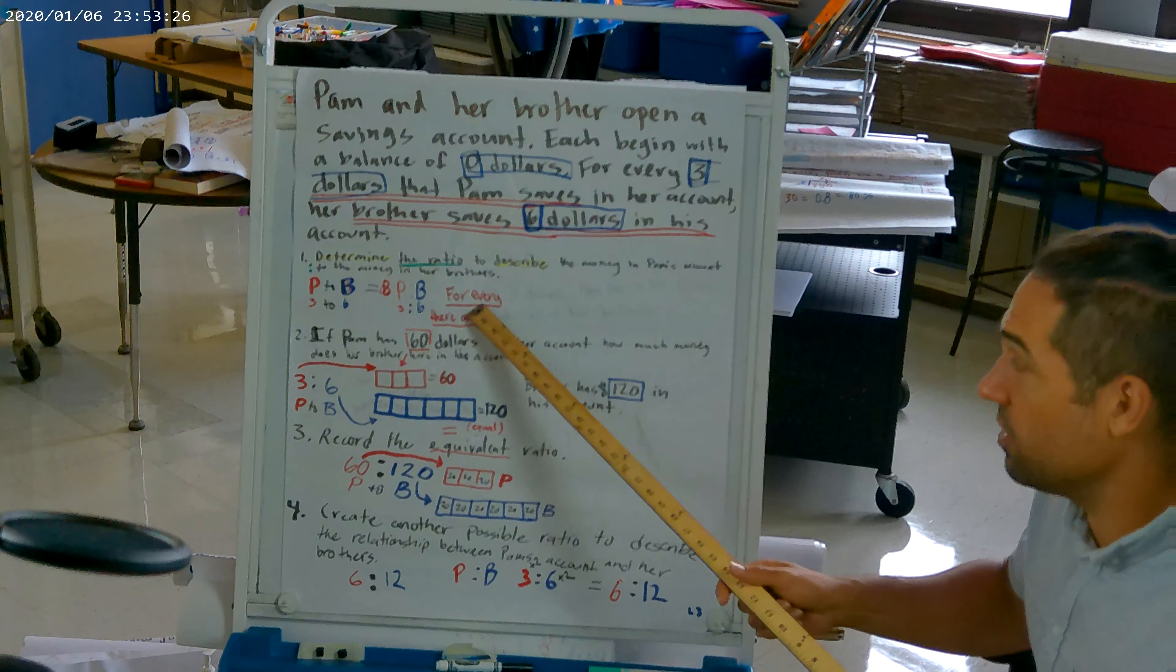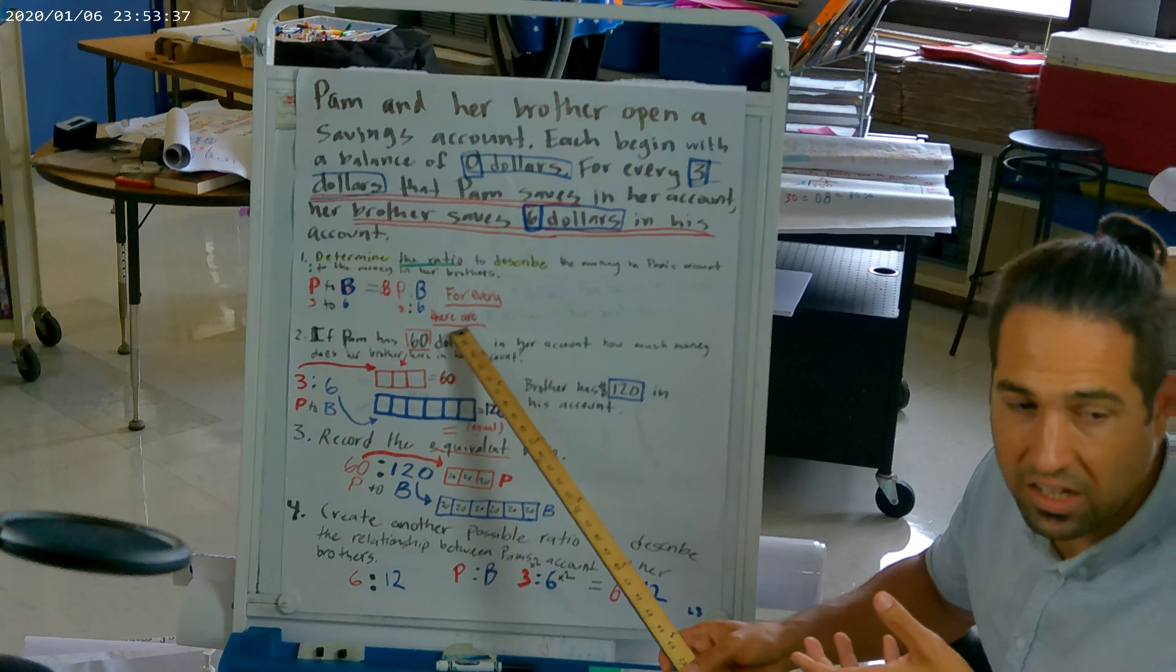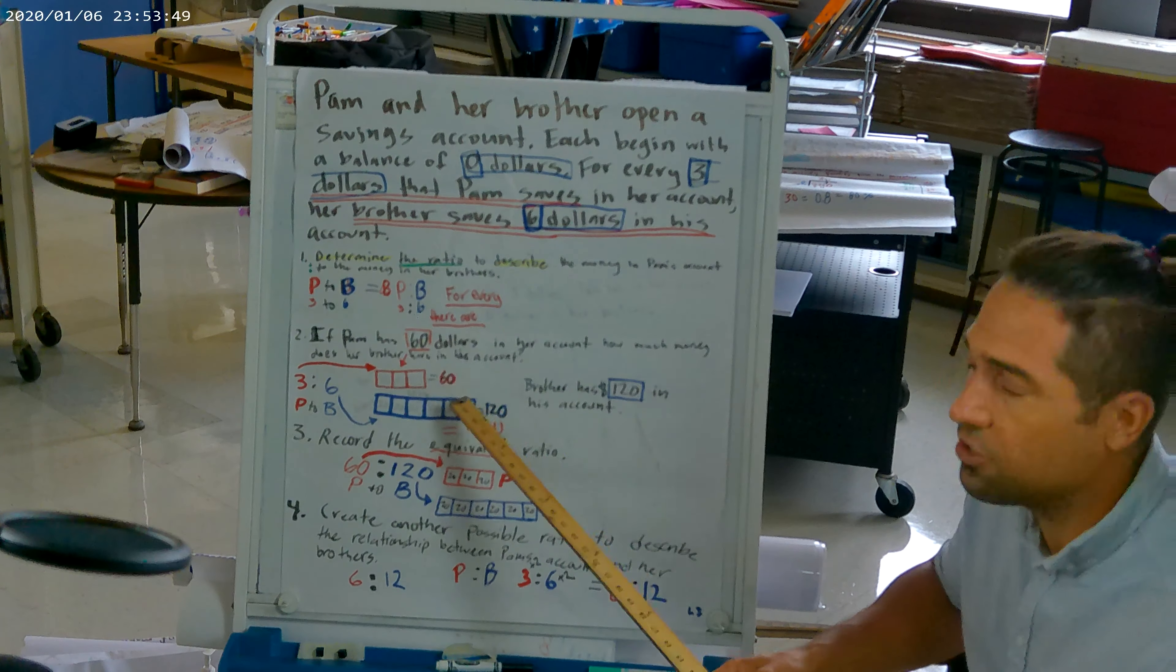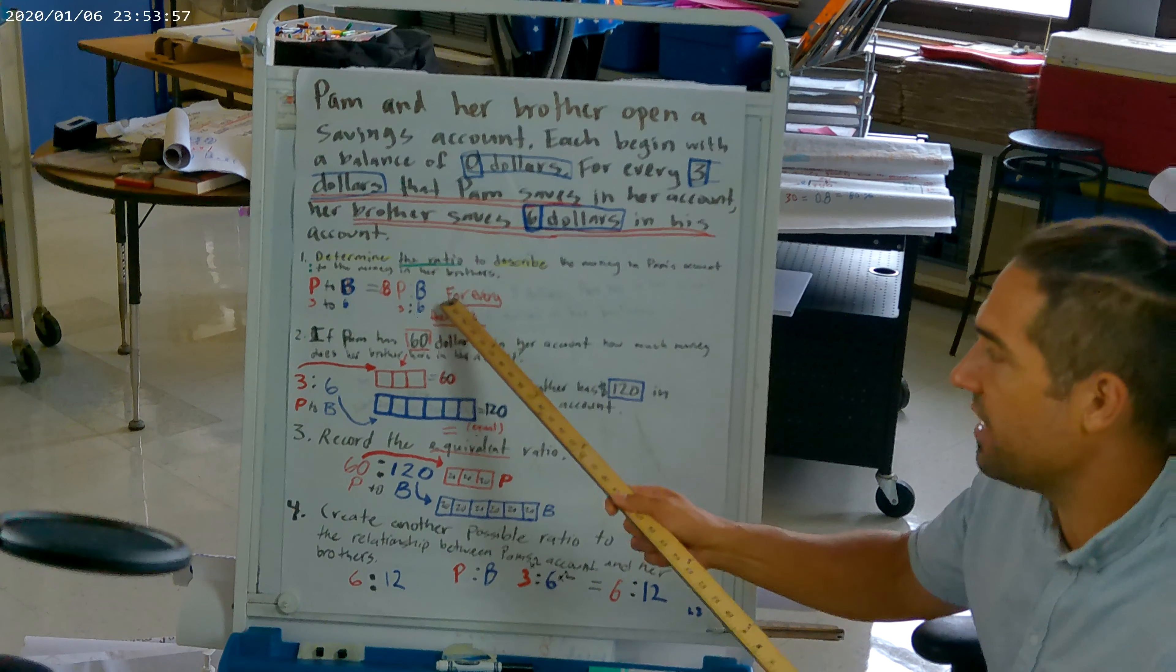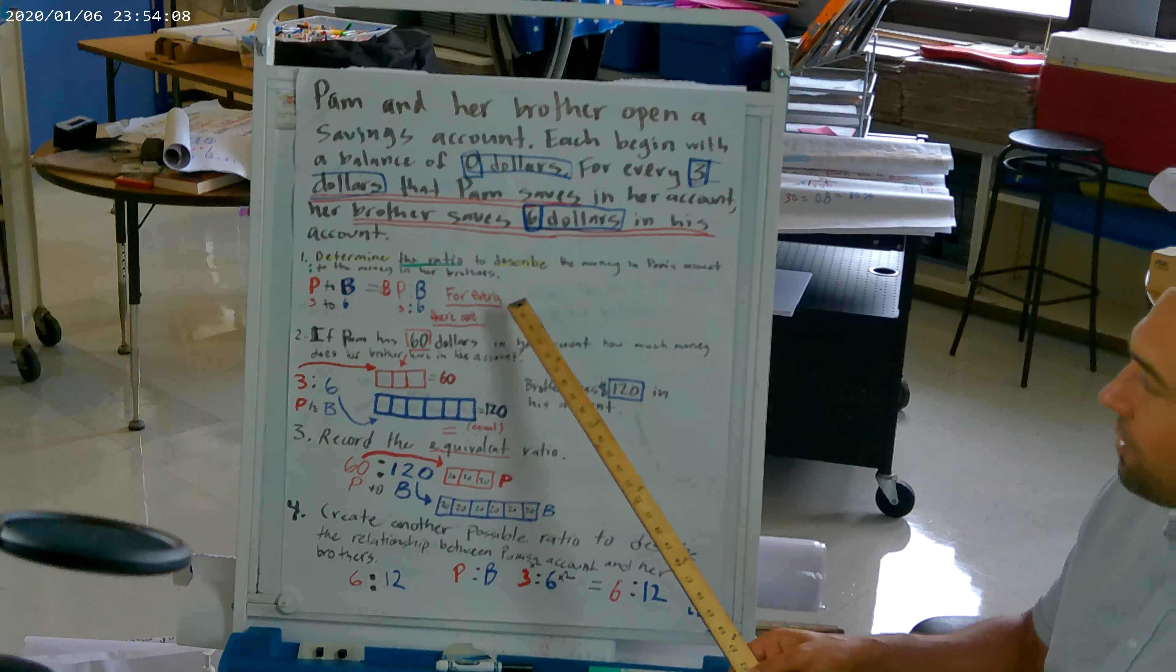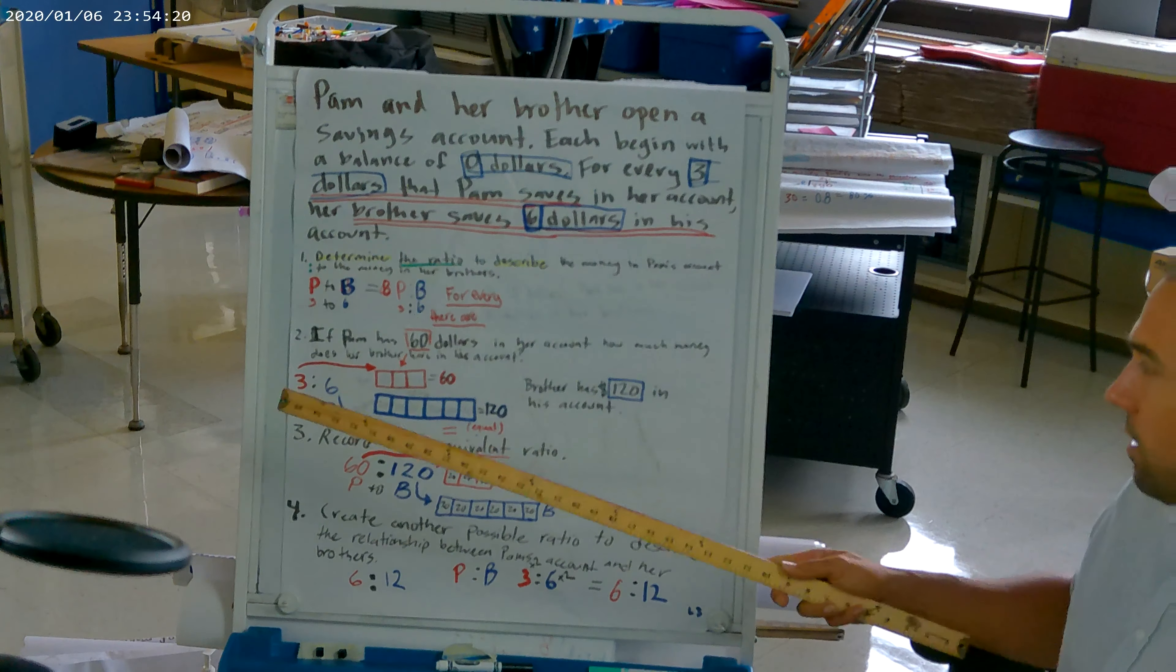We now write the description, which is using the ratio language. And for those of you who are still not quite clear on the ratio language, I will be providing a re-engagement lesson on that at our 10-15 meeting. You should know that it's a for every there are situation. For every $3 Pam has in her account, there are $6 in her brother's. So that is the way that we describe it using ratio language.